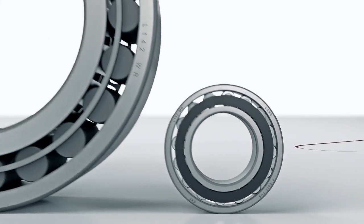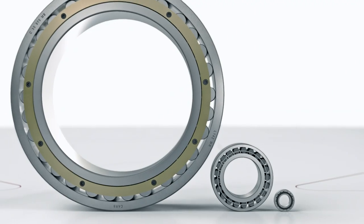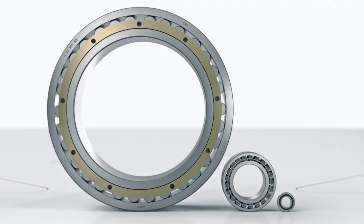CARB bearing is available for shaft diameters from 20 millimeters to 2 meters. Sealed bearings are also available.